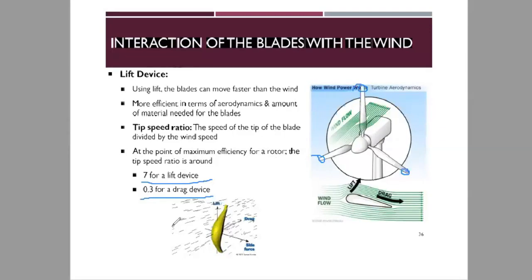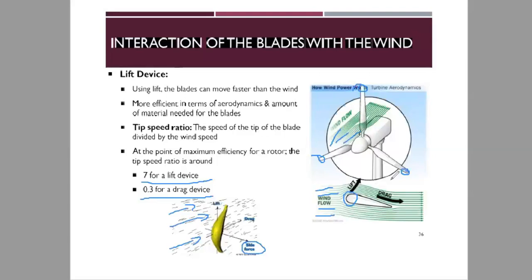A diagram shows the wind blowing perpendicularly, lifting right up at the blade and going to the back, then continuing. This gives a clear picture of perpendicular motion of the wind against the turbine blades and how the interaction works.